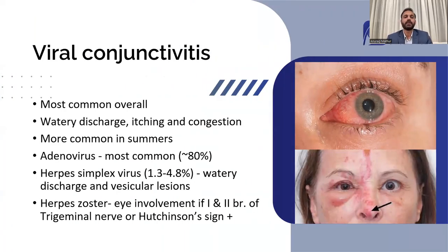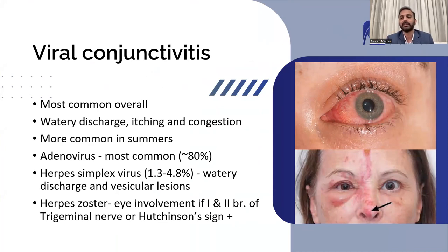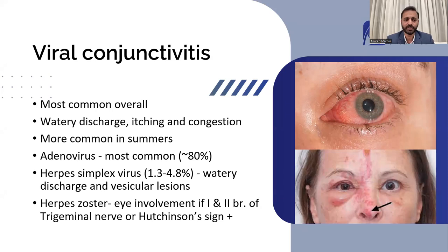Coming to viral conjunctivitis, which is the most common type of all types of conjunctivitis. It is very important to identify it in your clinic because it is very often wrongly diagnosed and overly treated. Patients would most likely give a history of watery discharge, itching in the eyes, and of course the eye will be congested with a follicular type of reaction. This condition is more commonly seen in summers, and the most common cause is adenovirus — 80% of cases.